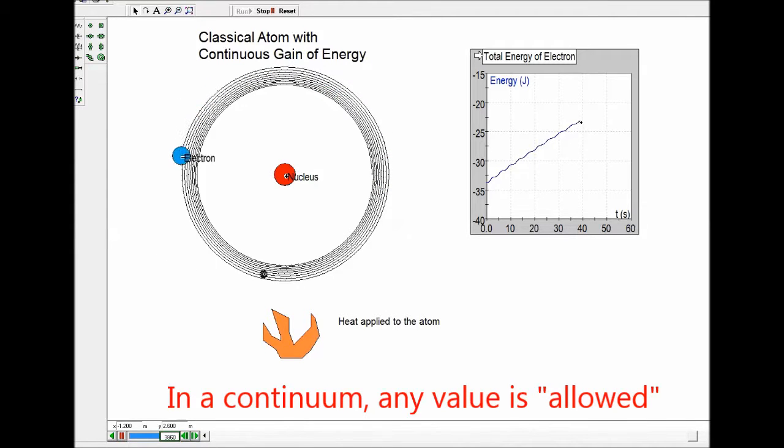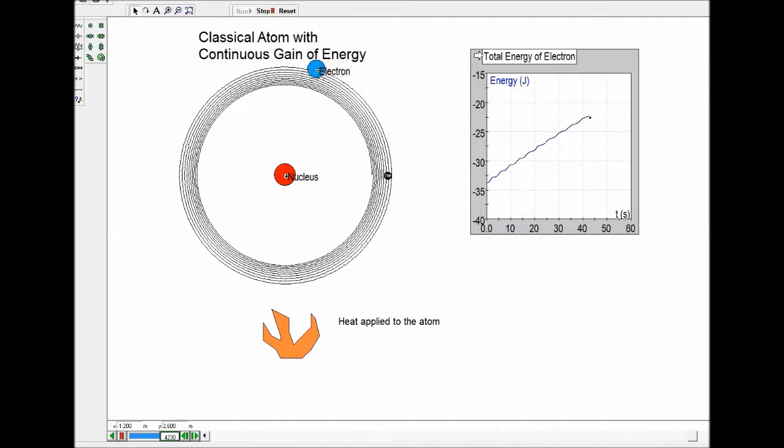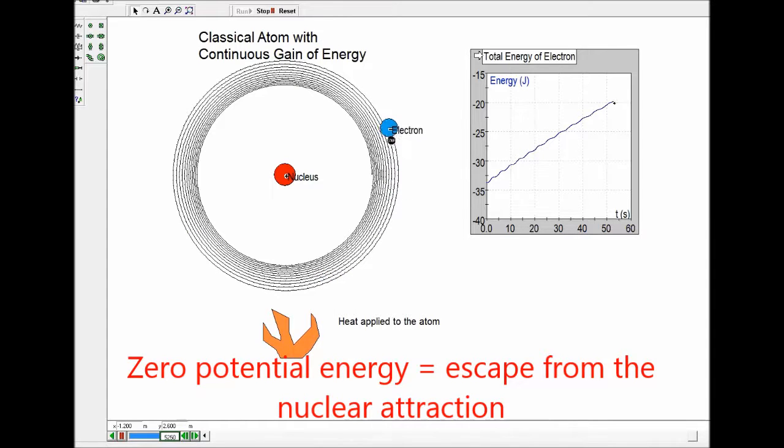As you can see, the electron's getting farther and farther from the nucleus. That increases its potential energy. You can also imagine that the electron will reach a time when its energy reaches zero. That will free the electron from the nucleus.